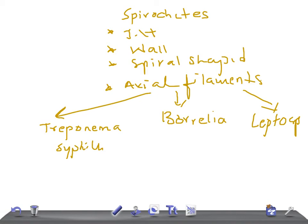Syphilis can also lead to congenital disease with stillbirth and malformations. VDRL and RPR are the screening tests. The microscopy used is dark field microscopy. The specific confirmatory test is FTA-ABS — Fluorescent Treponemal Antibody Absorption.